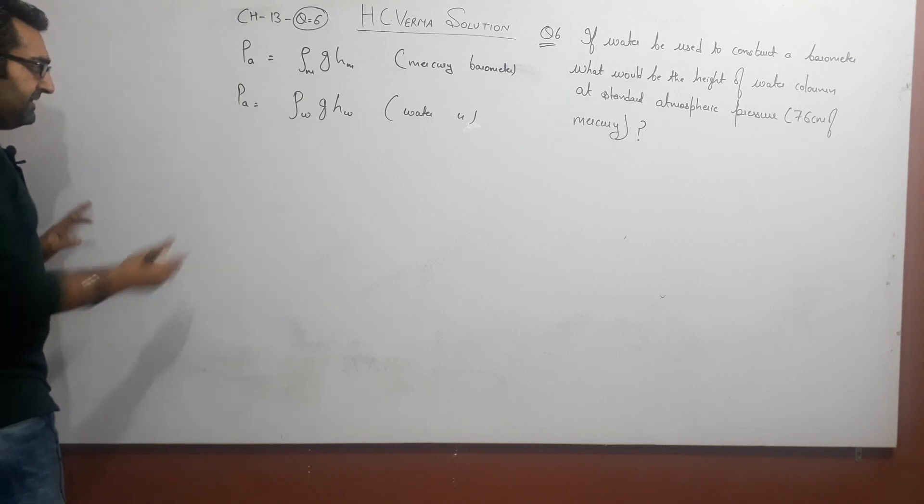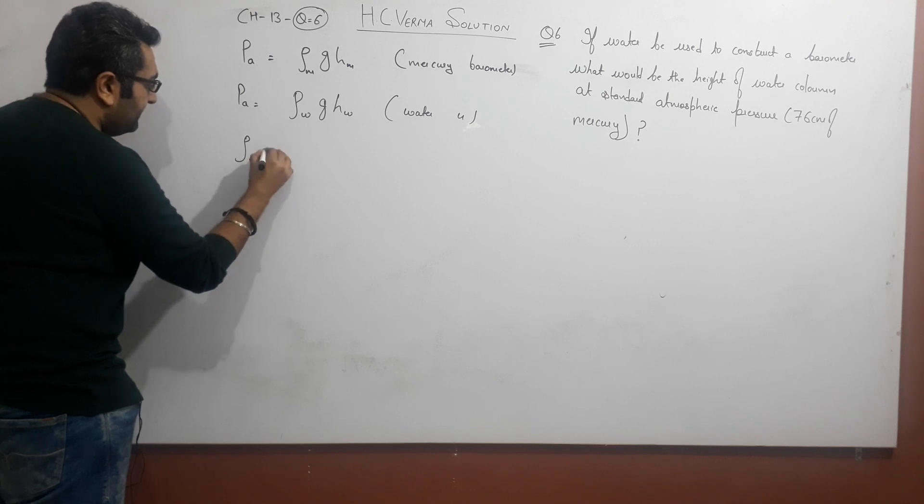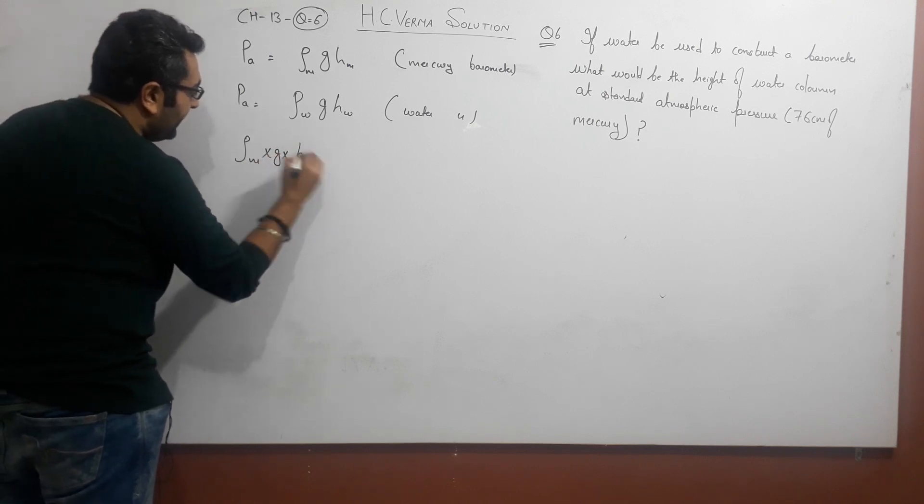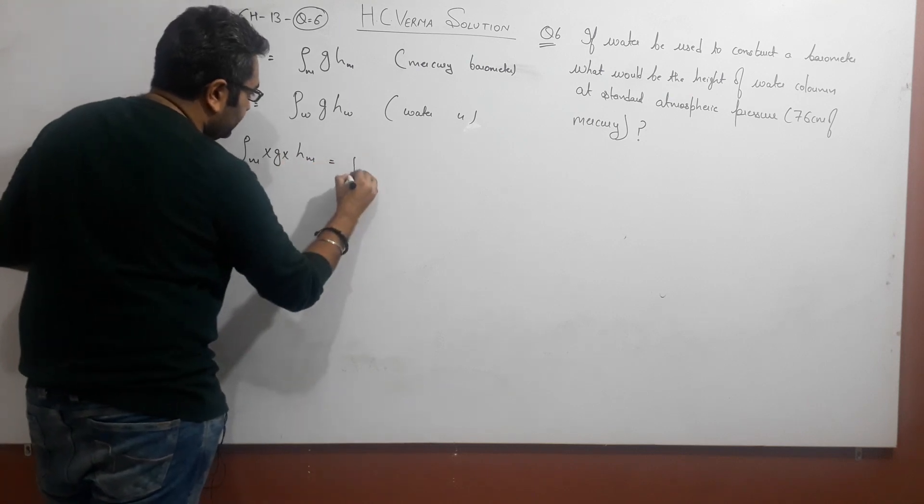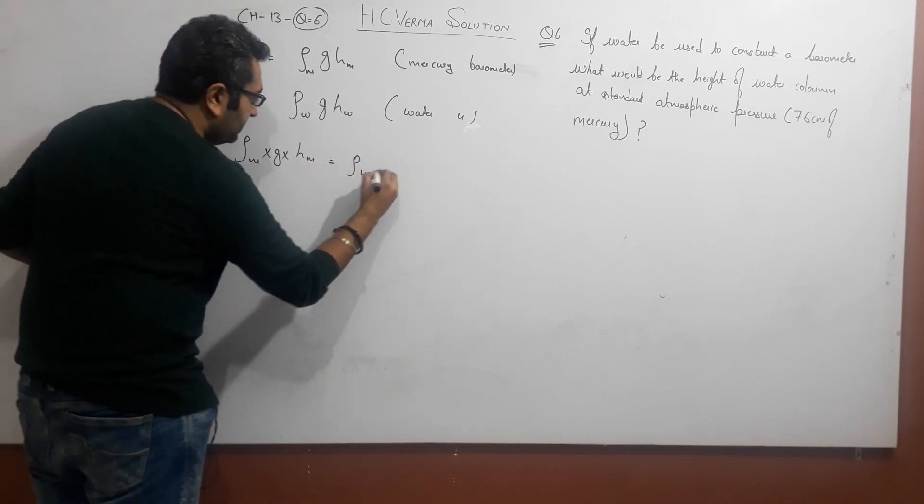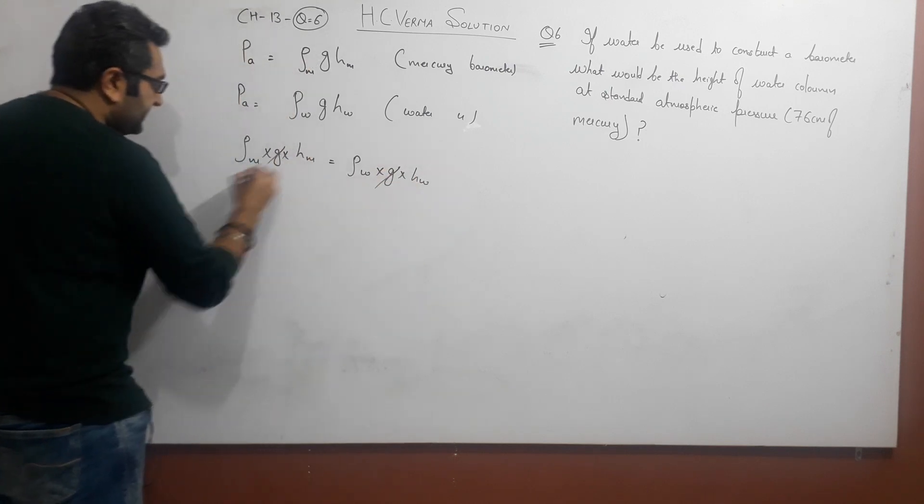So we have two measures of atmospheric pressure. Density of mercury multiply g multiply height of mercury is equal to density of water, g multiply h_w. G cancels out.